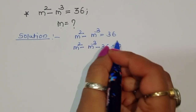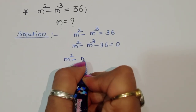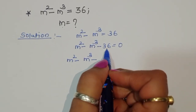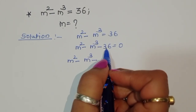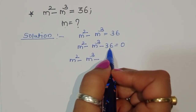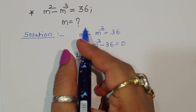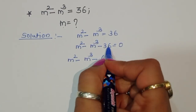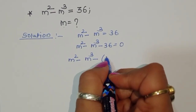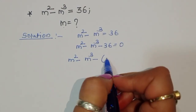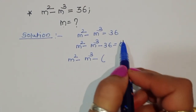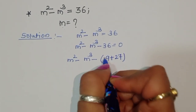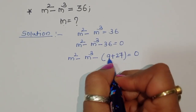Now we have this equation: m squared minus m cubed minus 36 equals 0. We need to convert 36 into the sum of two numbers that give square and cube forms. We can say 3 squared is 9 and 3 cubed is 27, so 9 plus 27 is 36.